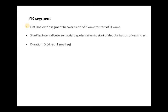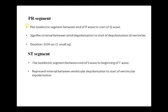The ST segment follows, and like the PR segment it is again an isoelectric line. It starts from the end of the S wave to the beginning of the T wave, and represents the interval between ventricular depolarization and the start of ventricular repolarization — because at the level of S, ventricular depolarization is completed, and from the T wave, ventricular repolarization begins. Its duration is approximately 2 to 3 small squares, that is 0.04 to 0.12 seconds.